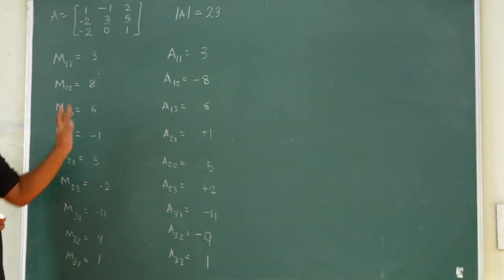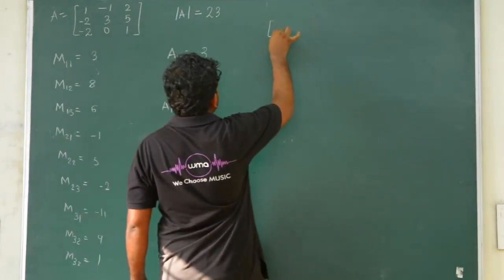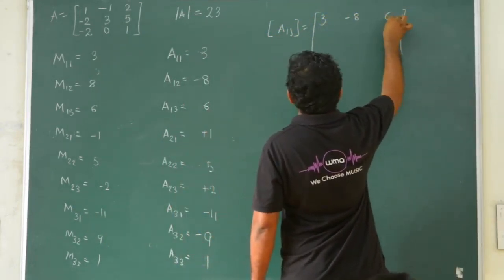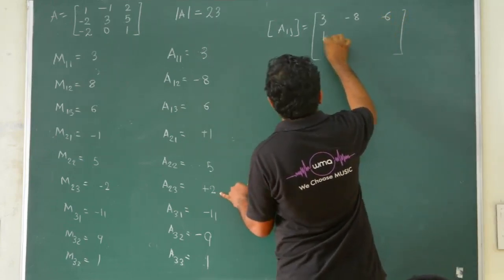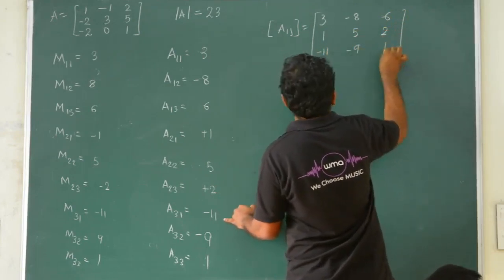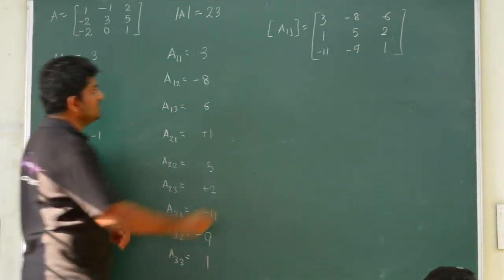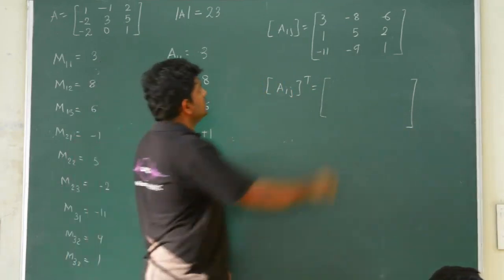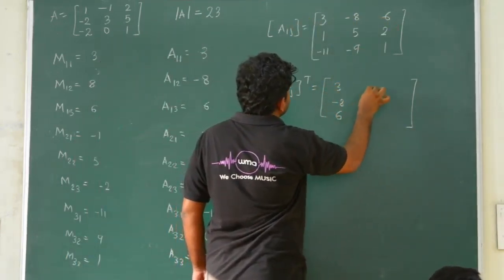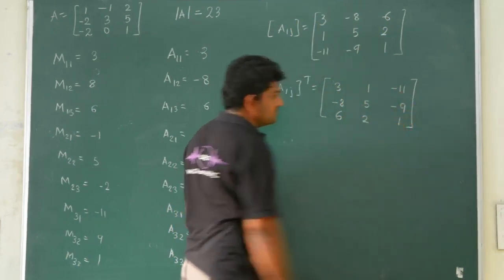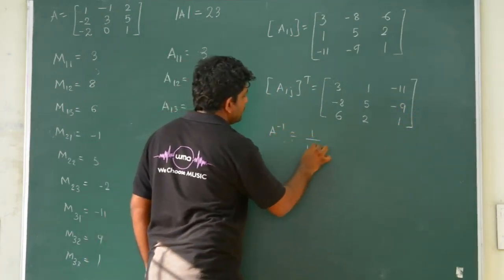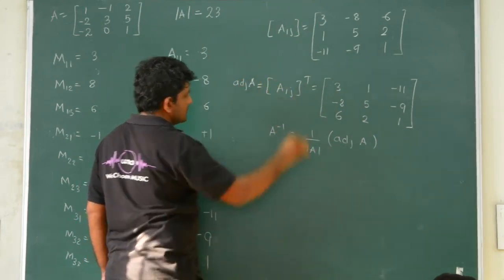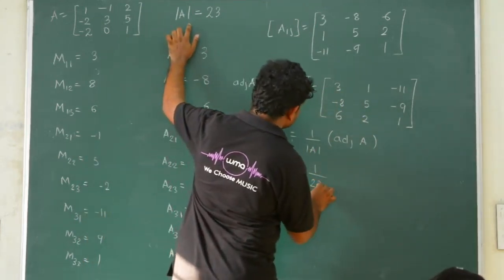After applying signs we get the matrix of cofactors: 3, minus 8, 6, 1, 5, 2, minus 11, minus 9, 1. This is the matrix of cofactors. Next, find the transpose by interchanging rows and columns: 3, 1, minus 11, minus 8, 5, minus 9, 6, 2, 1. This transposed matrix is called the adjoint of A. The last step: A inverse equals 1 upon mod A. Mod A was 23, so A inverse equals 1 over 23 times the adjoint matrix.